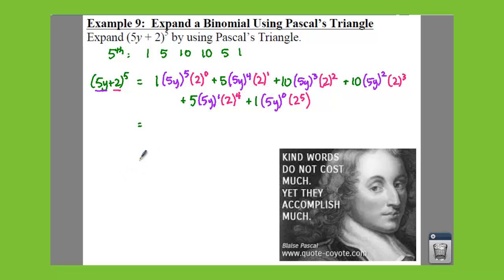If you have 5y to the fifth, that's going to give you 3125 y to the fifth. Your second term is going to end up giving you 6250 y to the fourth plus 5,000 y cubed